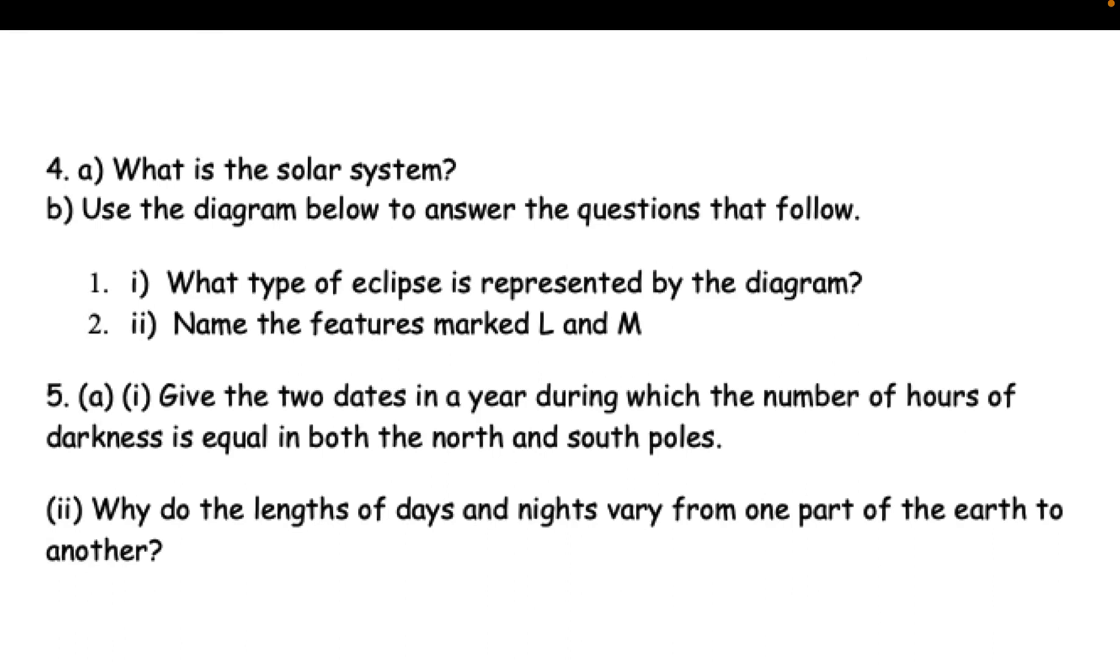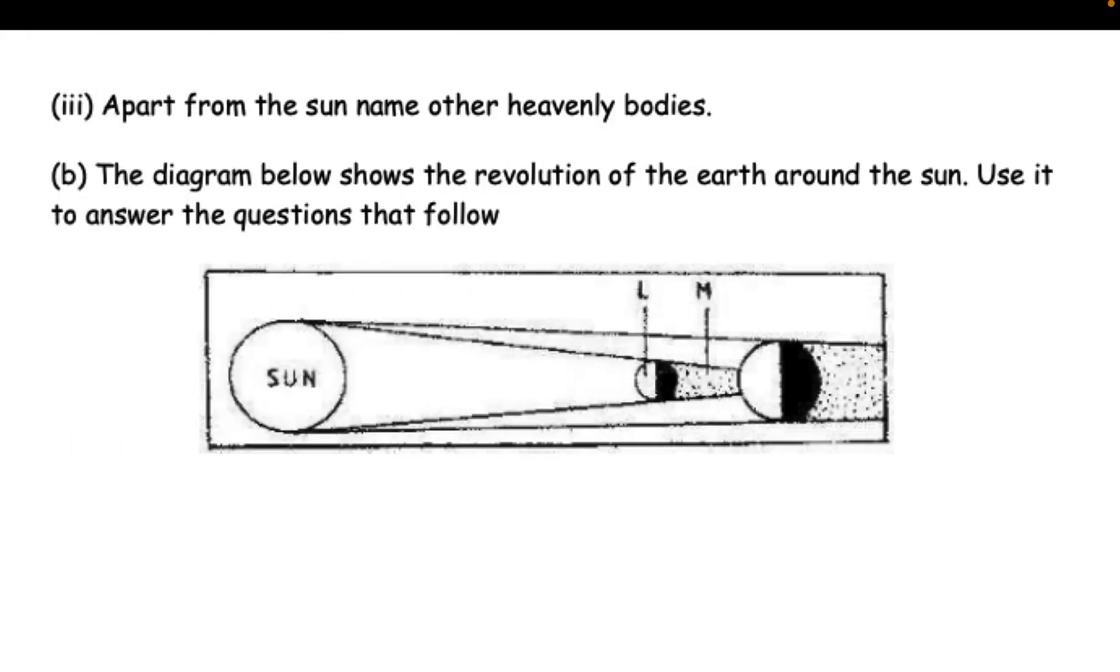4. (a) What is the solar system? (b) Use the diagram below to answer the questions that follow: (i) What type of eclipse is represented by the diagram? (ii) Name the features marked L and M. 5. (a) (i) Give the two dates in a year during which the number of hours of darkness is equal in both the north and south poles. (ii) Why do the lengths of days and nights vary from one part of the earth to another? (iii) Apart from the sun, name other heavenly bodies.